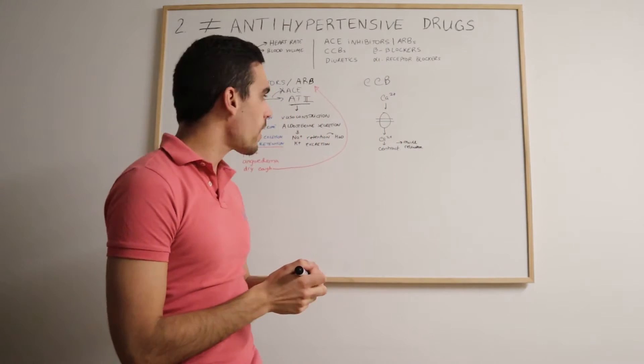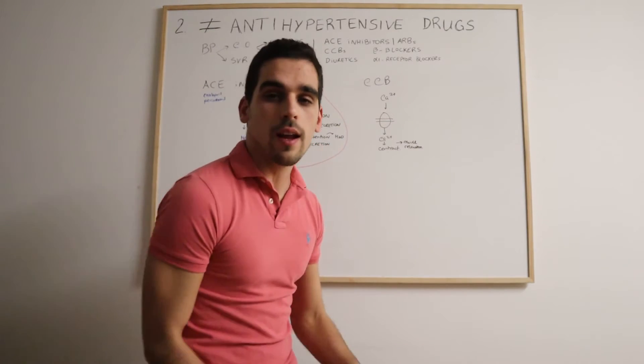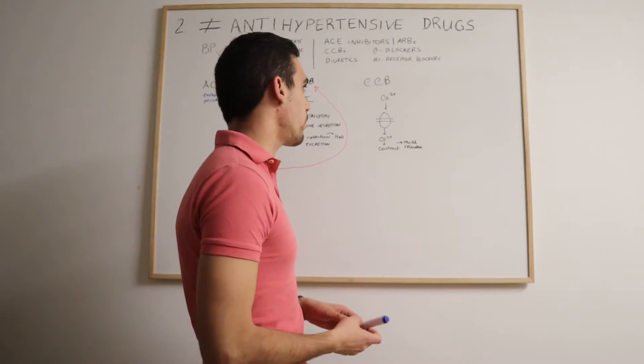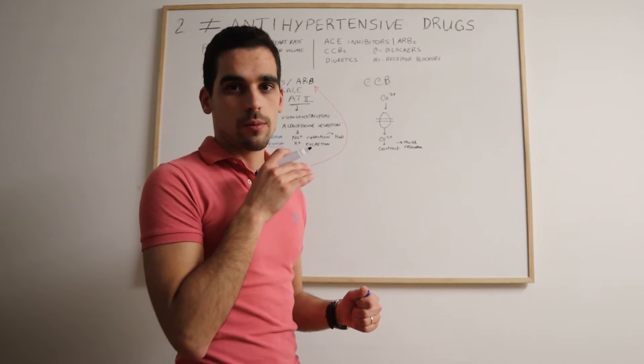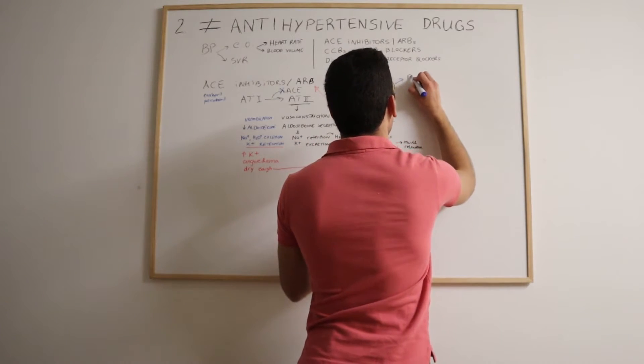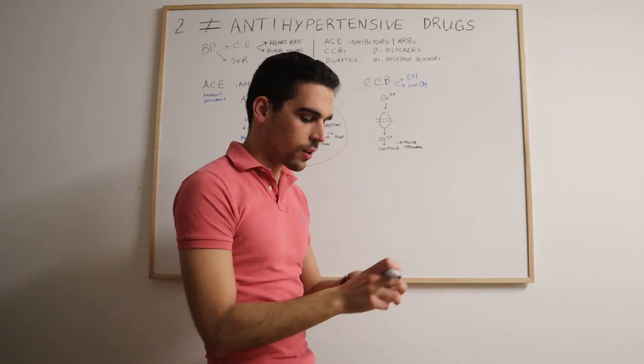There are different types of calcium channel blockers, and they can act and have their specificity for different tissues. We have non-dihydropyridine calcium channel blockers and dihydropyridine calcium channel blockers.